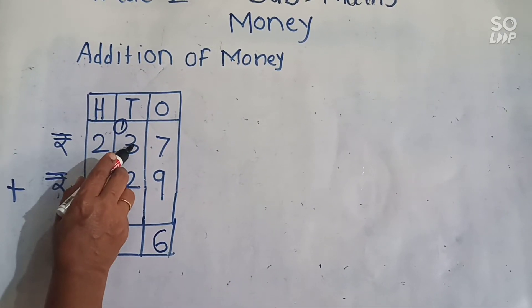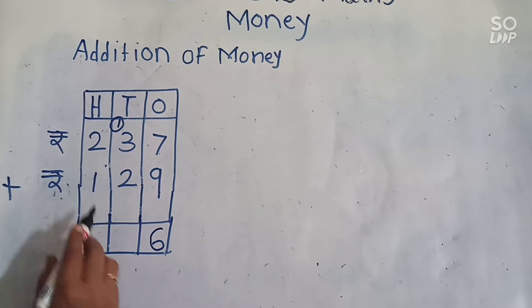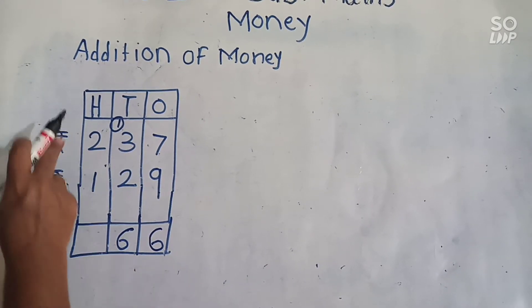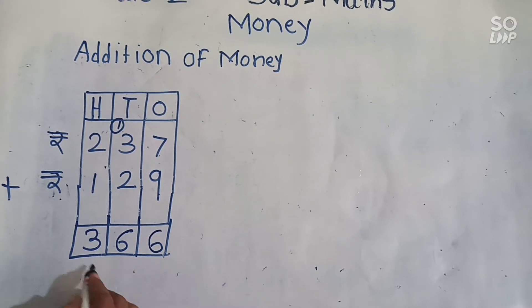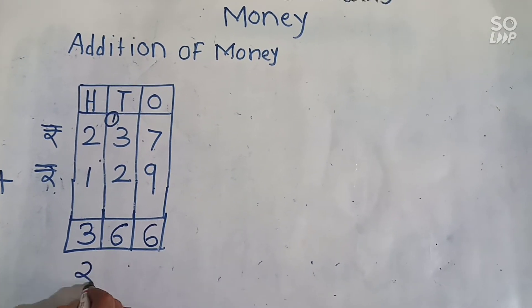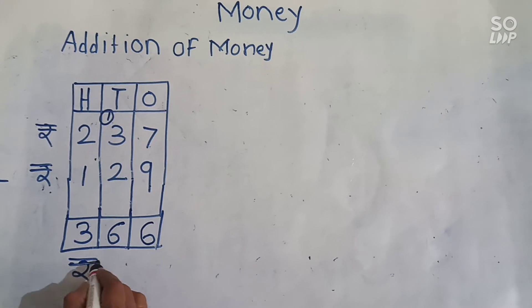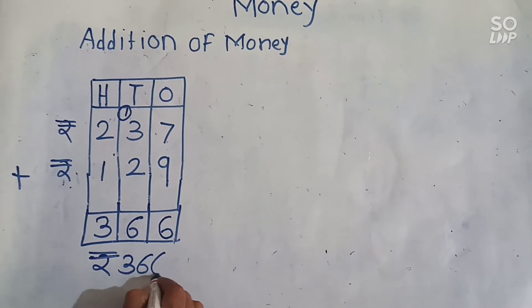Then 1 plus 3, 4 and 4 plus 2, 6. 100 plus 2 plus 1, 3. So answer is rupees 366.